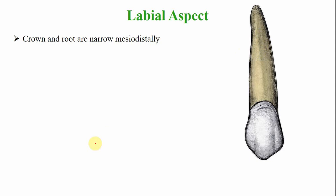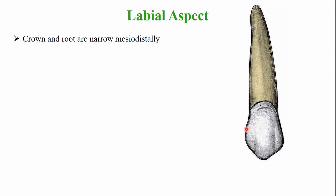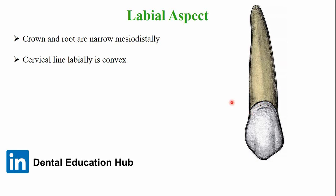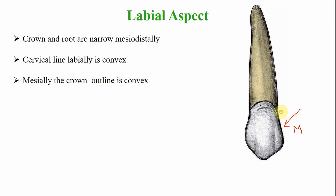From the labial aspect, the crown and root of this tooth are narrower mesiodistally compared to the other maxillary anterior teeth, especially the maxillary central incisor. The cervical line is convex with convexity directed toward the root apex. The mesial outline of the crown is convex overall.